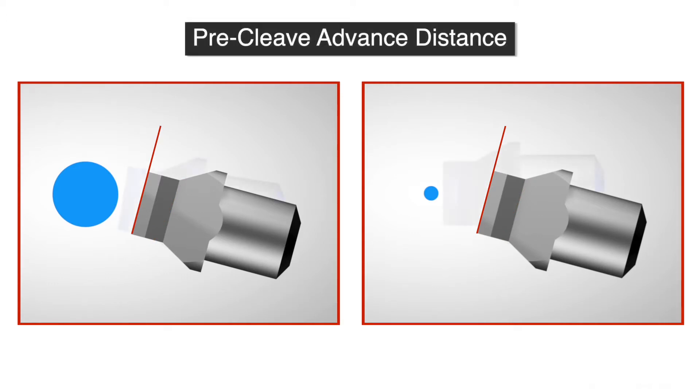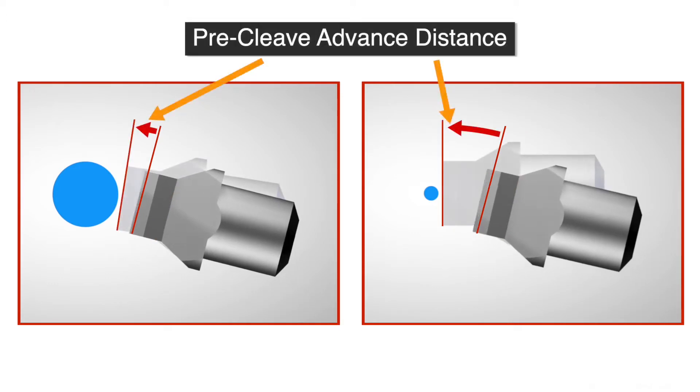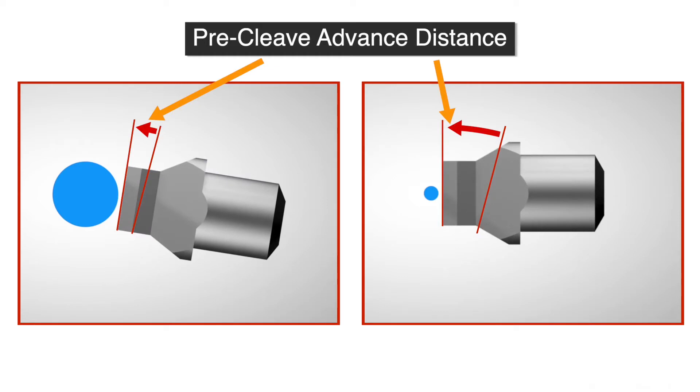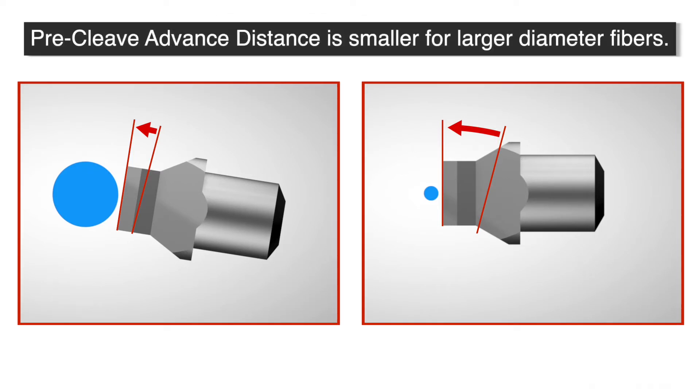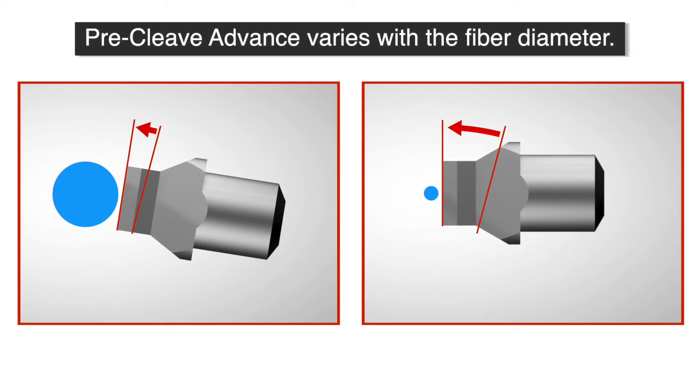The pre-cleave advance distance is the distance the blade moves forwards from the blade offset distance towards the fiber. It is modified to account for the fact that for larger fibers, the blade needs to move a smaller overall distance from home to reach the fiber. The pre-cleave advance value is therefore specific for a particular fiber size and cleave file.